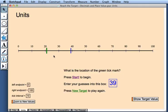Here we have a number line, and a green tick mark sits on the number line. Our goal is to determine the location of the tick mark.